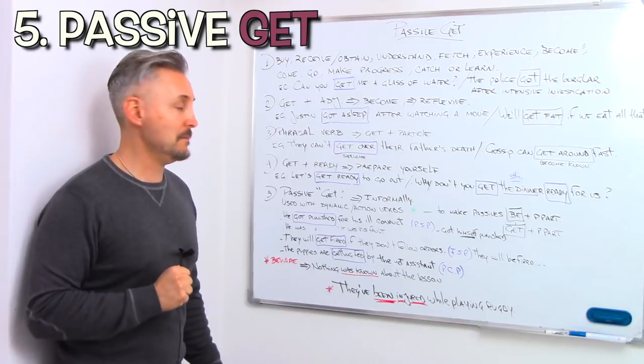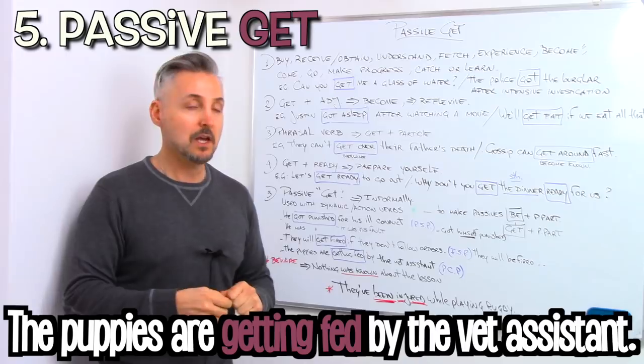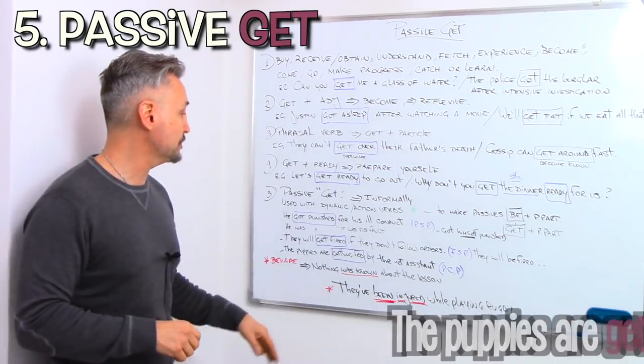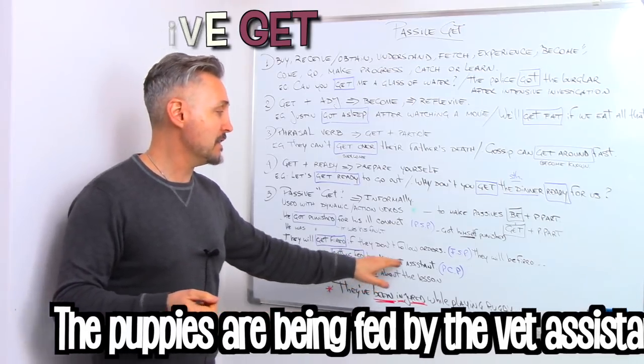So the other example was, the puppies are getting fed by the vet assistant. So in this case, we have the present continuous passive. As opposed to, the puppies are being fed by the vet assistant.